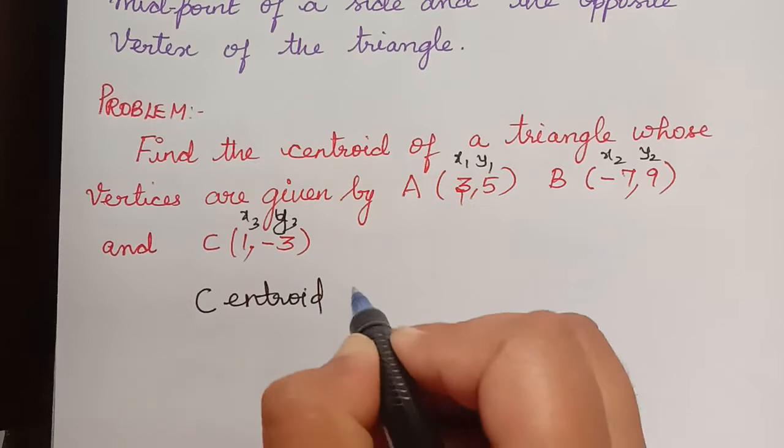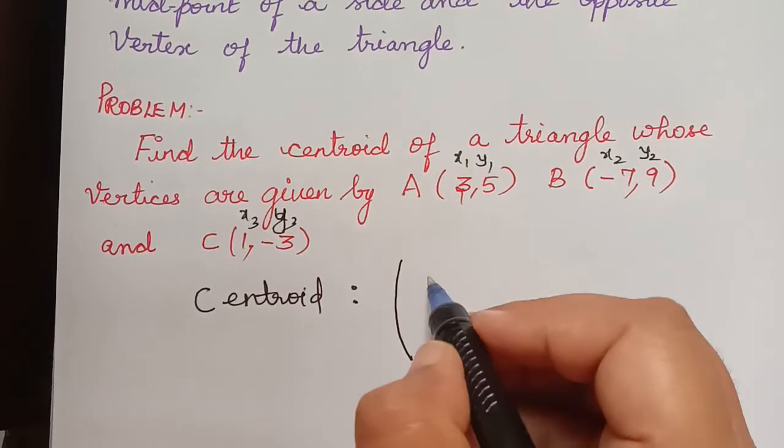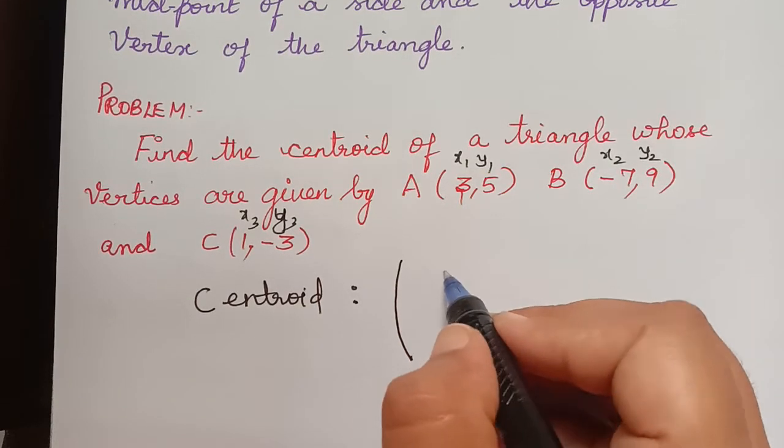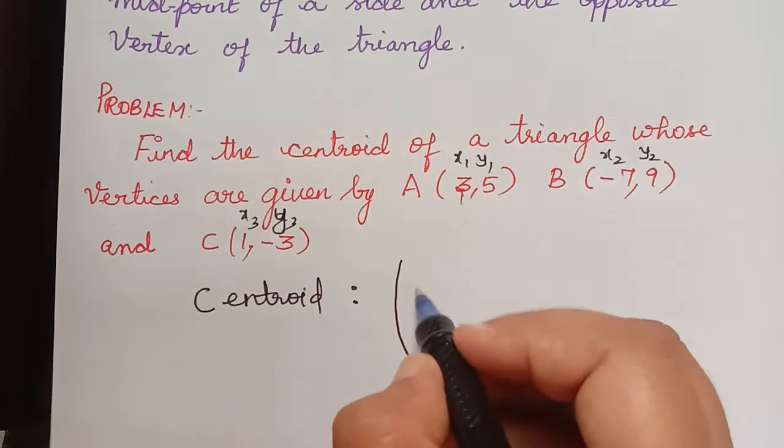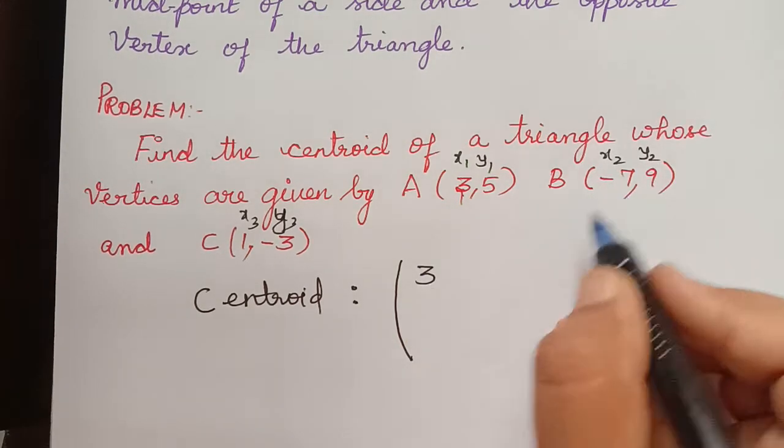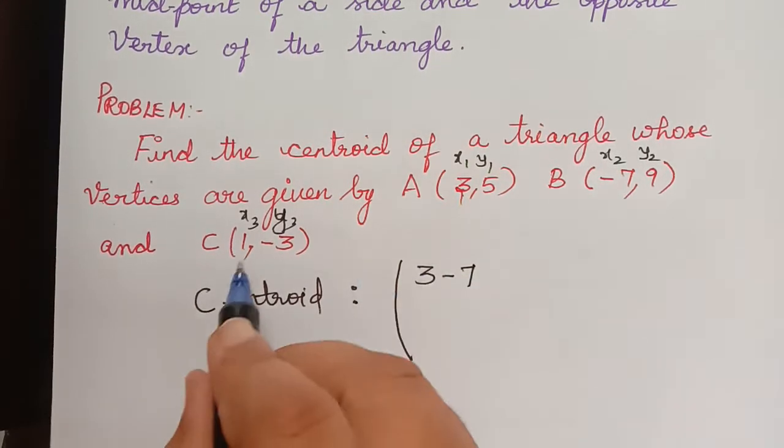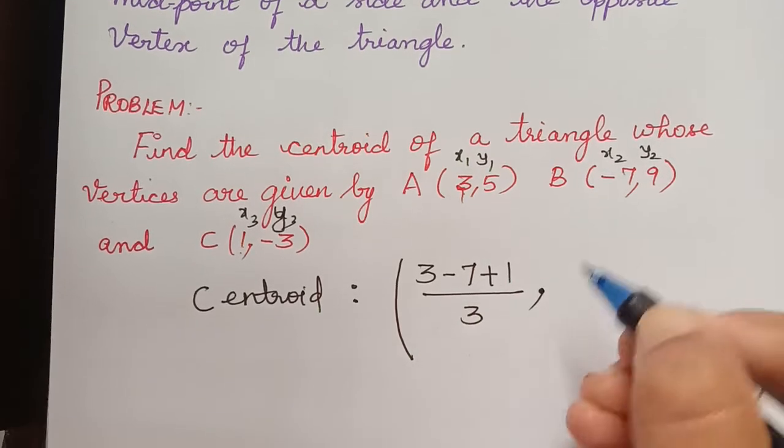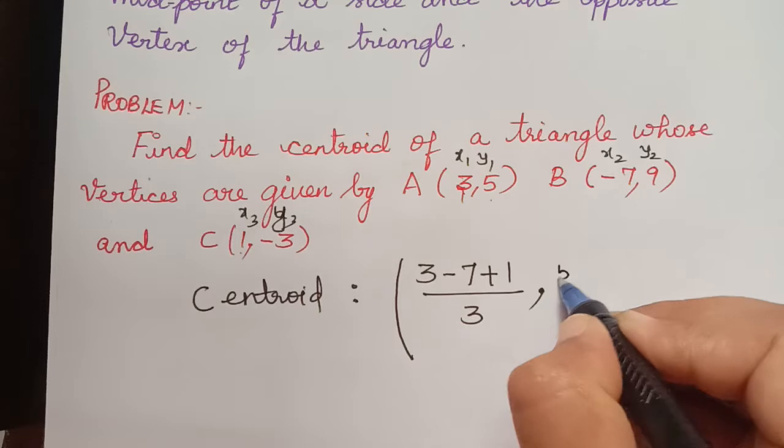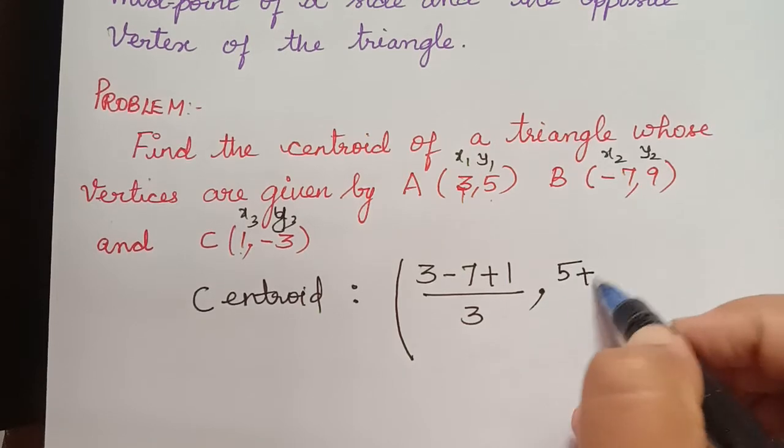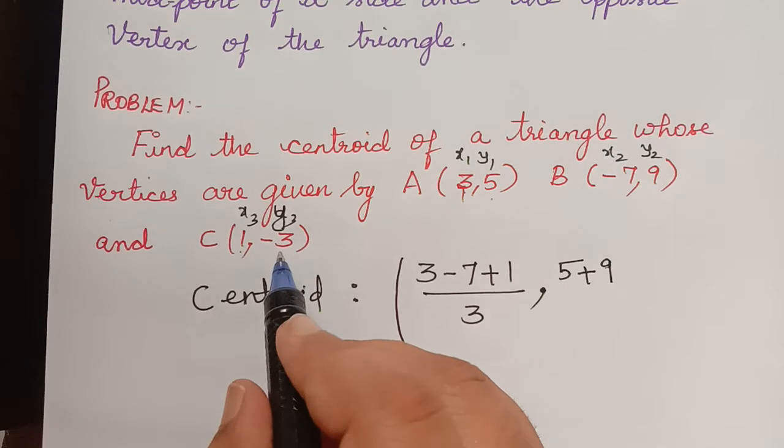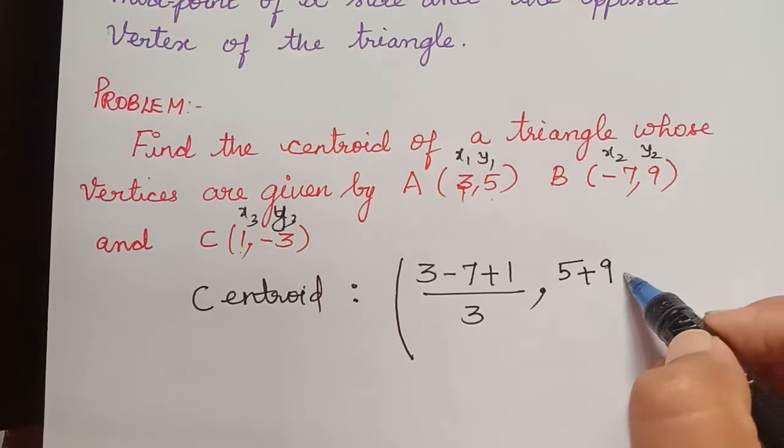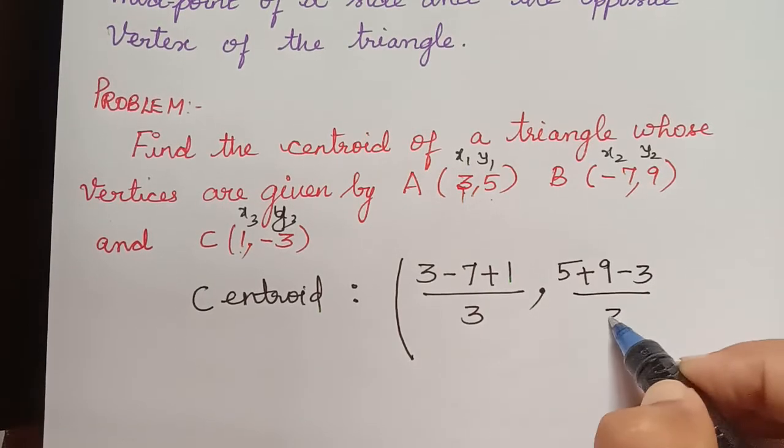Centroid of this triangle, we know that it is x1 plus x2 plus x3. What is x3? So 3, x2 is minus 7 plus x3 is 1 divided by 3, comma y1. So 5 plus y2 plus 9 and y3, y3 is minus 3. So minus 3 divided by 3.